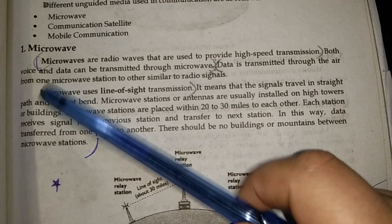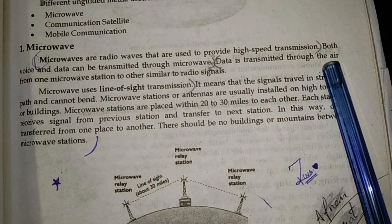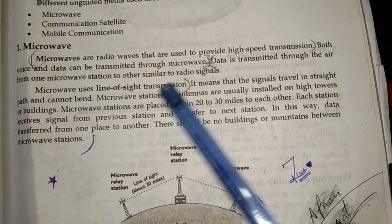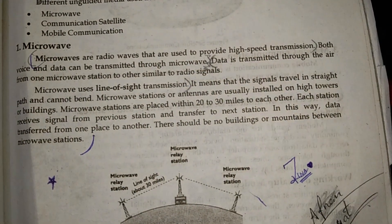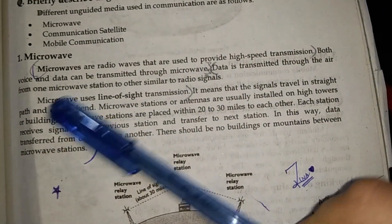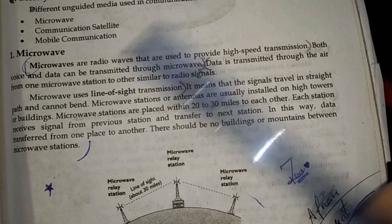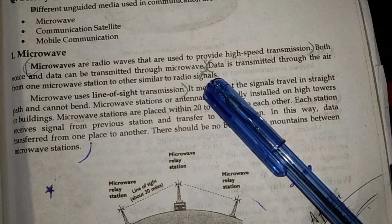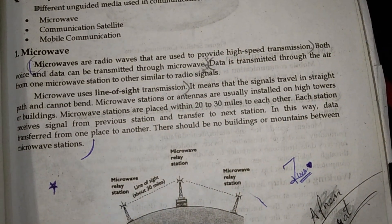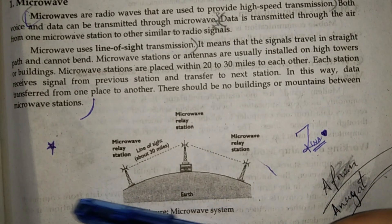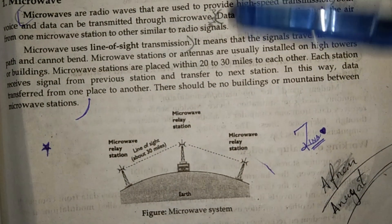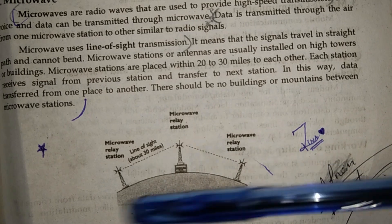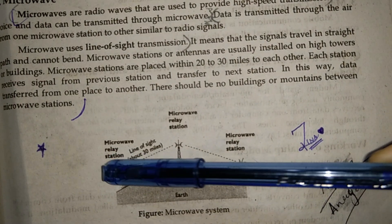Microwaves are used to transmit signals from one microwave station to another. Radio signals propagate between stations, carrying data. One microwave station transmits to the next, and so on, with radio signals traveling between them.